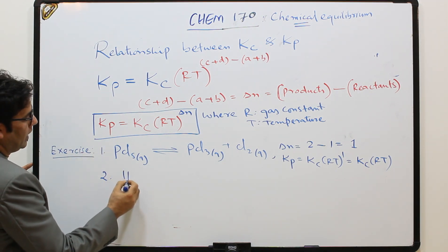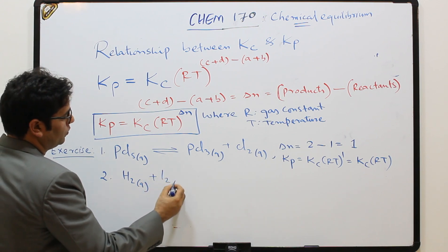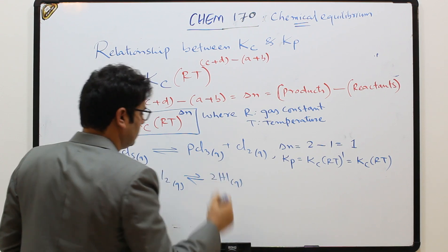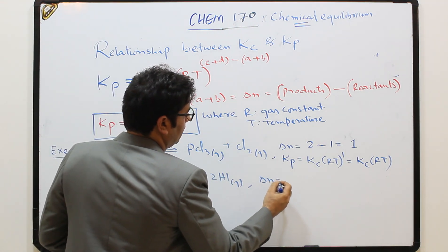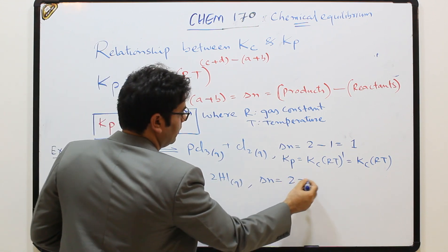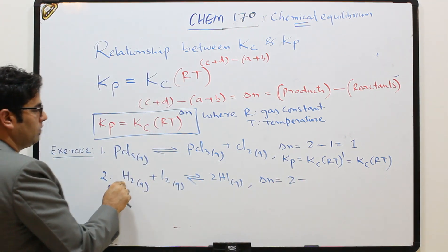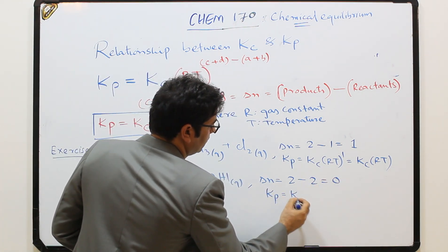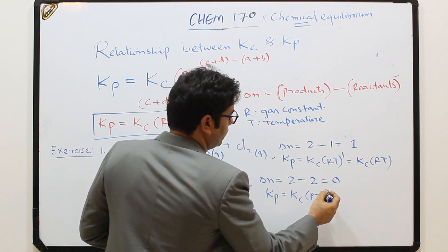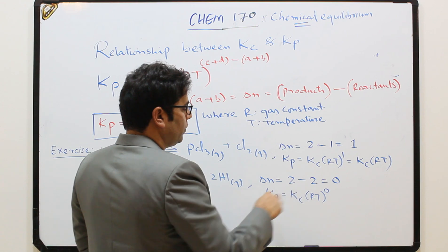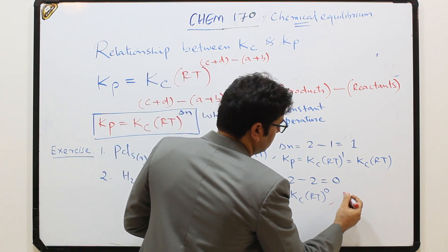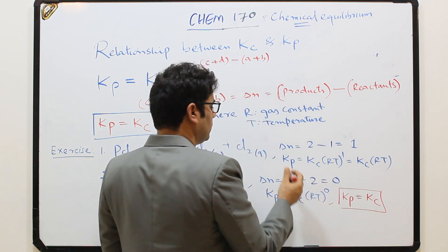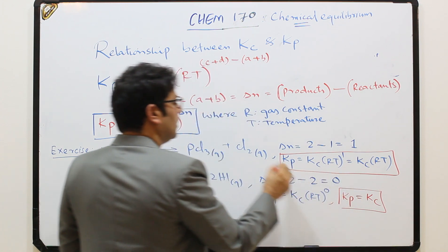Another example: H2(g) + I2(g) ⇌ 2HI(g). What will be ΔN? Products = 2 molecules, reactants = 1 + 1 = 2 molecules, so ΔN = 2 − 2 = 0. Therefore Kp = Kc · RT^0. Anything raised to power 0 is 1, so in this example Kp = Kc.